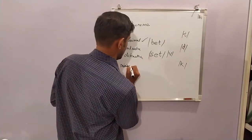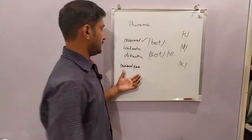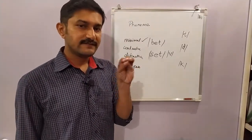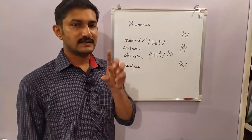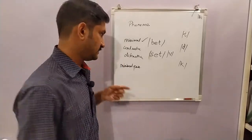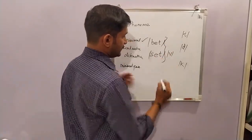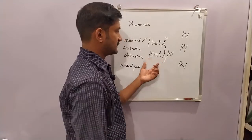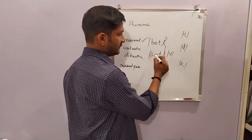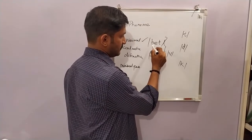Now we come to the concept of minimal pairs. Minimal pairs are a set of words which differ from each other in one sound segment. 'Bet' and 'set' form one minimal pair — these two words differ from each other in one sound segment: b and s.